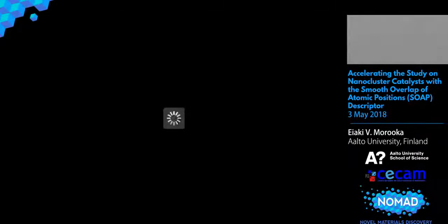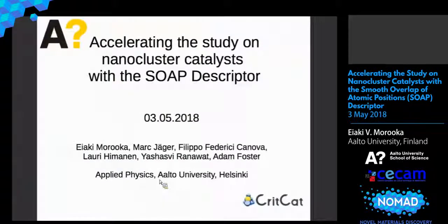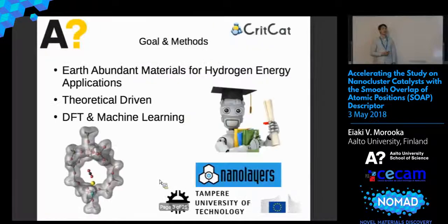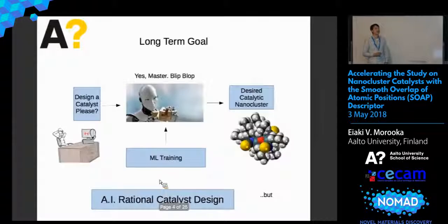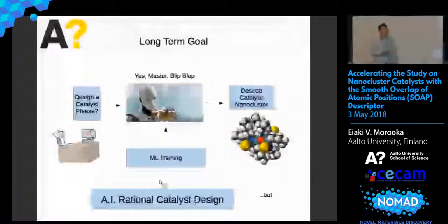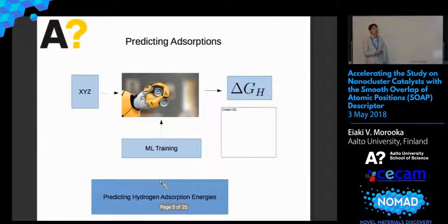What would be amazing is if we can just tell the computer to design a catalyst without the structure, which is basically an artificial enzyme. But this is in the 23rd century territory. For the first trial, we would try to predict the adsorption energy of hydrogen for the hydrogen evolution reaction. This could be a neural network or anything.